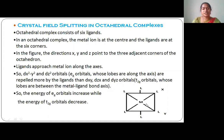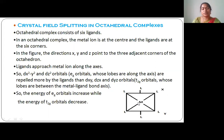The metal atom contains d orbitals. The d orbitals whose loops are present along the x, y, and z axes repel more compared to the loops of the d orbitals which are present in between the axes. The dz² and dx²-y² orbitals have loops along the x, y, and z axes, so they go to higher energy compared to the t2g orbitals, because the t2g orbital loops are present in between the axes.